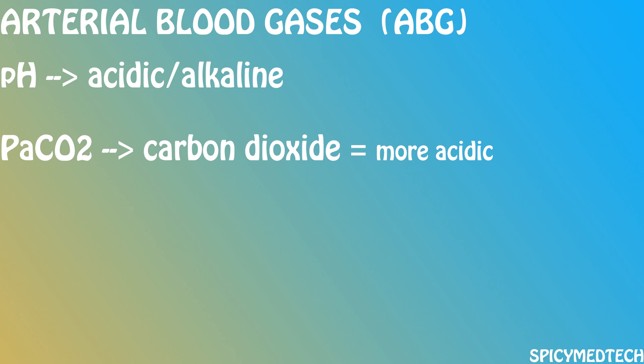The next is PaCO2, which is basically the measurement of carbon dioxide in the sample. I want you to relate CO2 with your respiratory system, your lungs. Remember that the more CO2 present, the more acidic the sample. Carbon dioxide is not an acid in itself, but it is directly proportional to the number of hydrogen ions in the sample, and the more hydrogen ions, the more acidic the sample.